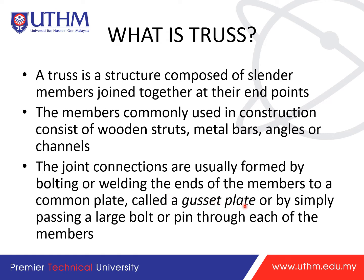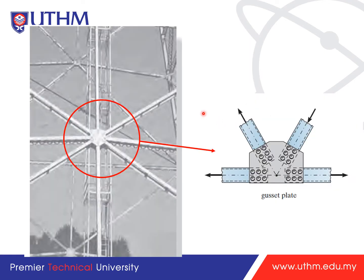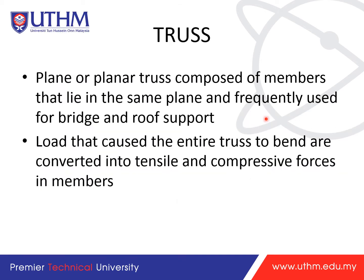Joints can also be formed by simply passing a large bolt or pin through each of the members. Trusses are commonly used for rooftops. You can see that this is a truss structure — a tower. You can see the gusset plate and how the joints are connected. The truss is either a plane or planar truss — 2D or 3D.